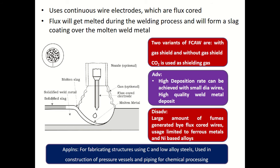In the case of flux cored arc welding, it uses continuous wire electrodes, and these electrodes are flux cored. If you look at the image below, you can see the flux cored electrode — the core or inner part is flux covered by the electrode material. The cross section of the flux cored tubular electrode wire is also shown here.